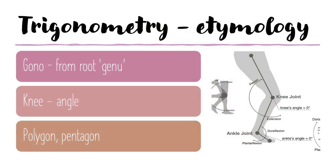Having gone to look on etymonline, it tells me that the gono part in trigonometry comes from the root genu, which originally — and this is pretty cool — meant knee. So if you look at the word knee, it's not far off. And the word knee is linked to the word angle — it kind of came from the same place, both from the root genu. So if you think about other words with that gon or gono in them, you've got polygon, pentagon. Well, penta means five, so a pentagon must have five angles. Poly means many, so a polygon must have many angles. So now I look back at trigonometry and I can pretty much work out what it is that we're measuring three of.